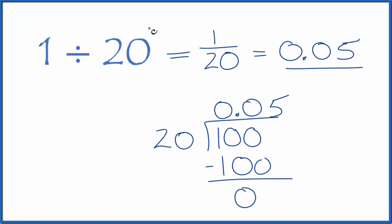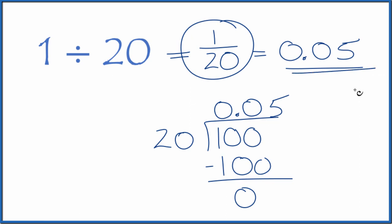This is Dr. B dividing 1 by 20. You get the fraction 1 20th, or the decimal 0.05. Thanks for watching.